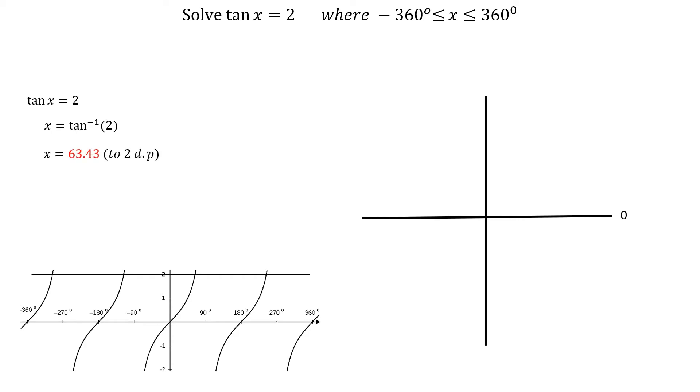Tan is positive in the first and third quadrants, so we show 63.43 degrees from the horizontal in these two quadrants.